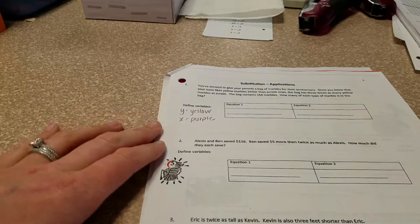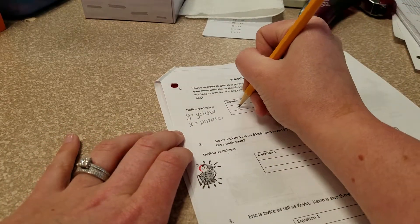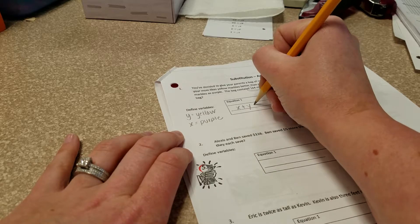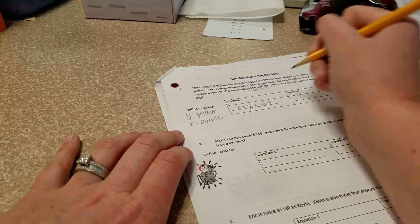First of all, we know that all together there's 164 marbles. So X marbles plus Y equals 164.